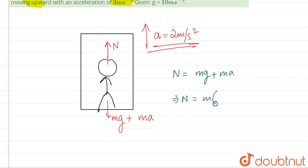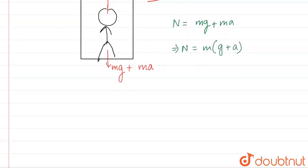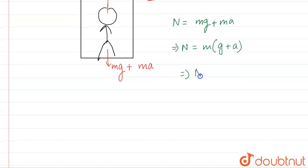So N will be equal to mass into g plus a. Mass of the man is 75 kilograms, so N will be equal to 75, g is 10, and acceleration a is 2.